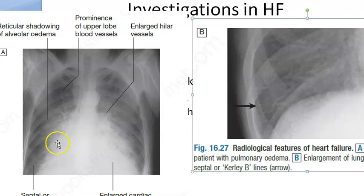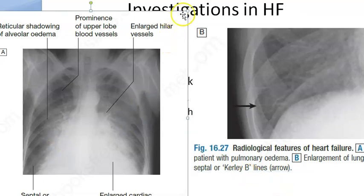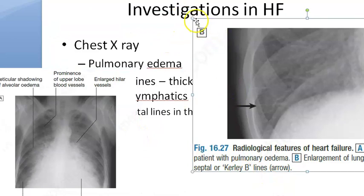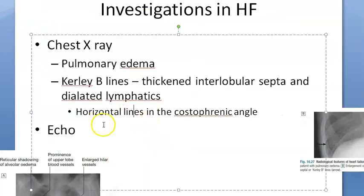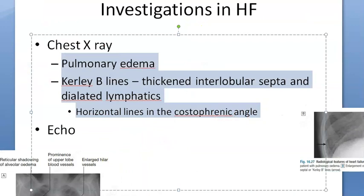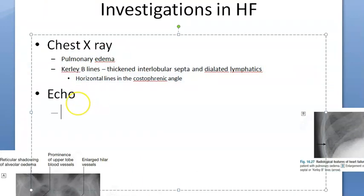There is also pleural effusion shown. The next investigation you want to do is echocardiography. In echo, you should be able to see left ventricular hypertrophy, any valvular conditions, and any stenosis of the valves.